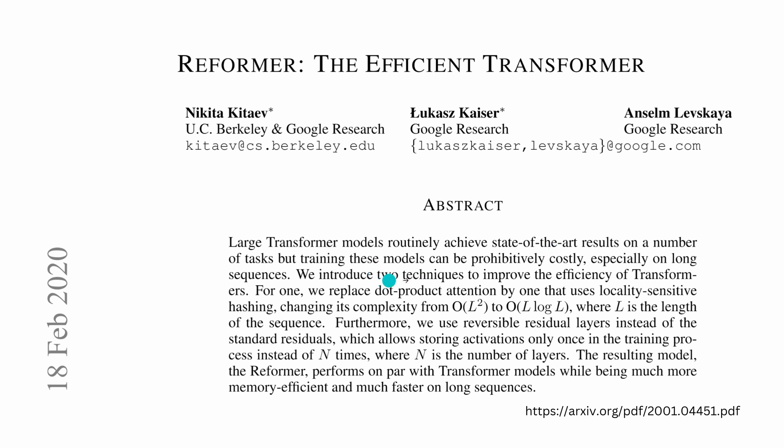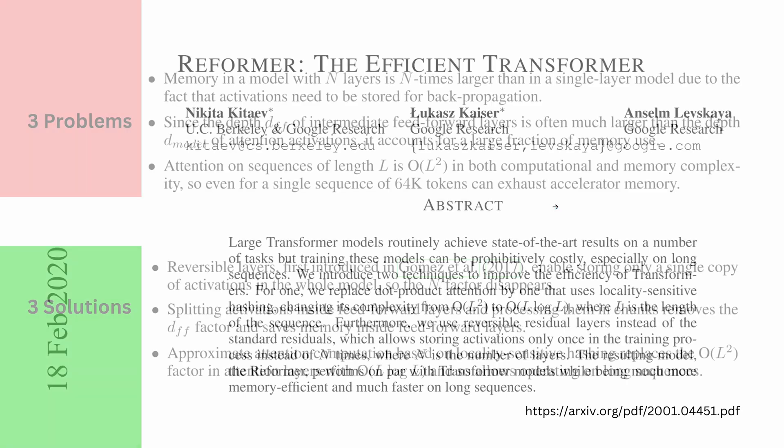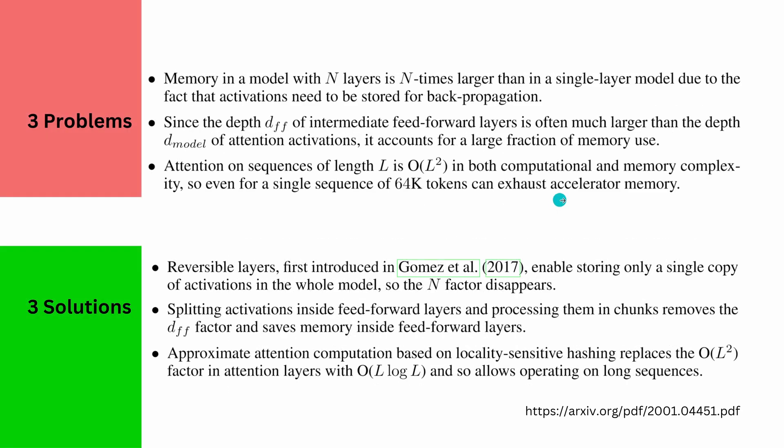They proposed two techniques. We're going to have a look at both. First, they replaced the dot-product self-attention. Remember dot-product self-attention. Second, they were using something on the residual layer architecture of your transformer to make it reversible for better backpropagation. Now I know you're going to enjoy this, so here we go. We have three problems, and I already give you the solutions just to show you that you always know where we are operating in the next pages.